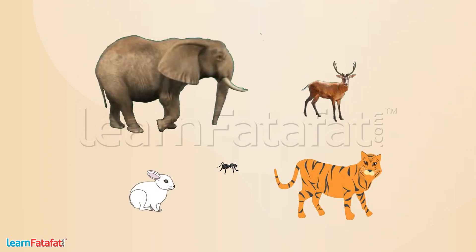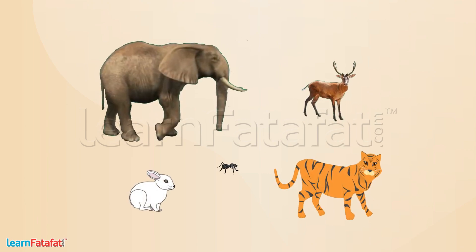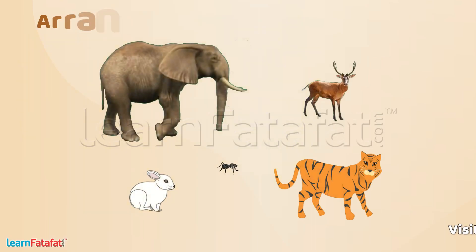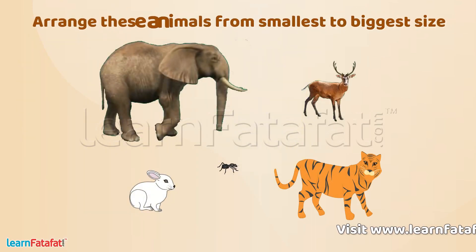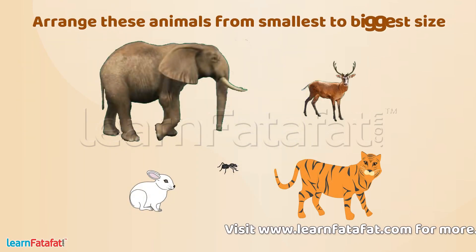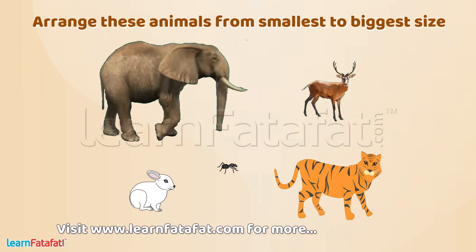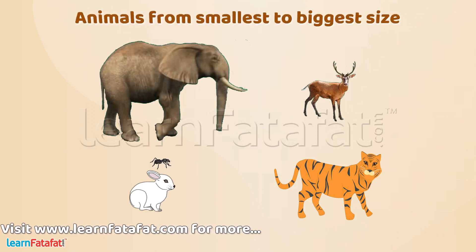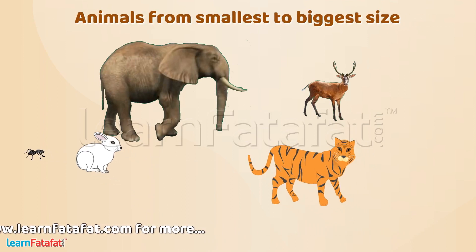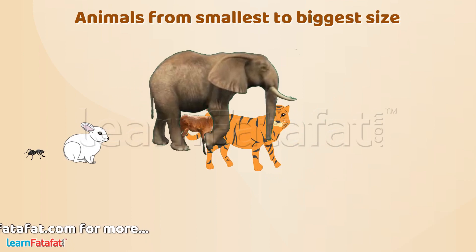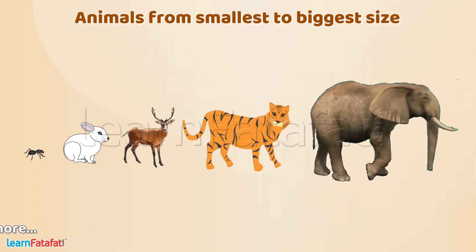Now look at these animals — they are all of different sizes. Can you arrange these animals in order of their size from smallest to biggest? Yes, like this we can arrange them from smallest to biggest.